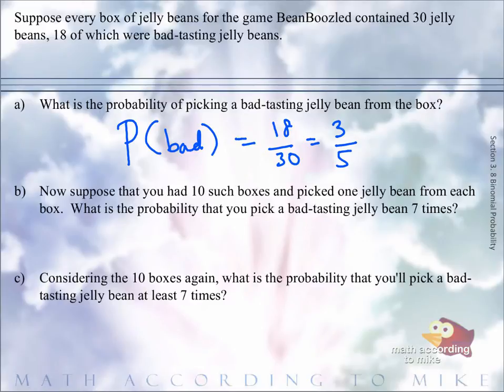So what we'll do here is we'll say we'll have a combination of, we have 10 boxes, and we want seven successes. A success in this case is picking a bad bean. So don't think of the word success as always being a good thing. And you might like bad beans, who knows? Times, the probability of picking a bad bean was three-fifths. That was from part A. And we want that to happen seven times.